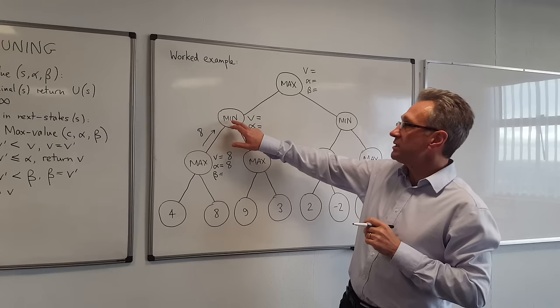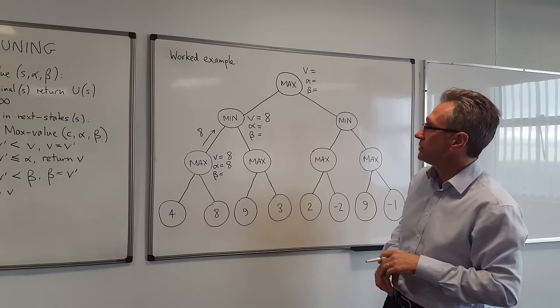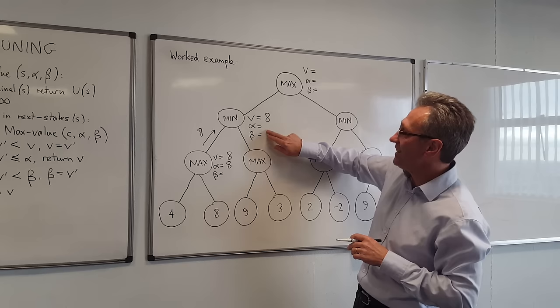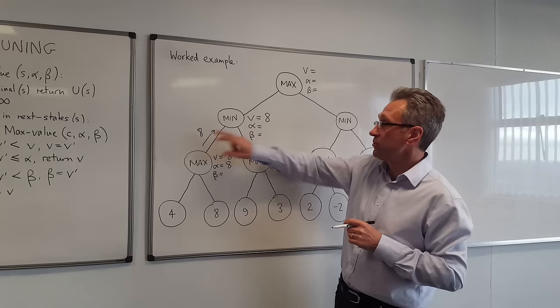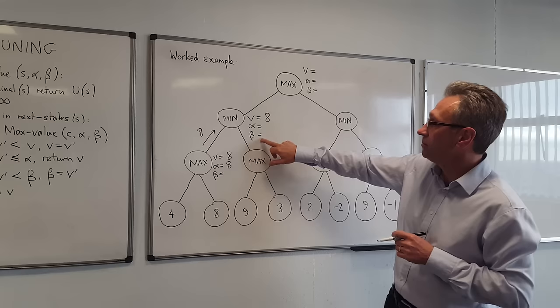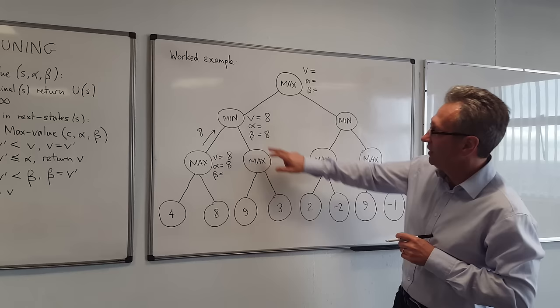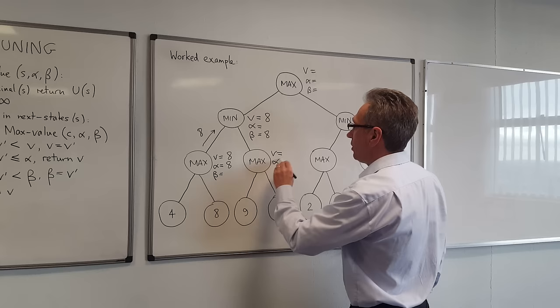This node is a min node, so we're running the MinValue algorithm here. The first thing we do is update the value, because this is the first value we've found. We then ask: can we prune based on alpha? If the value we've just found is less than or equal to alpha, then we can stop the search — however, we haven't got a value for alpha. Finally, if the option we've found is better for Min (i.e. lower than the current beta), we update beta. So we've now got a current value of 8 for this node, and beta — the best alternative for Min — is currently 8. We pass down the value of beta when we call the next node.